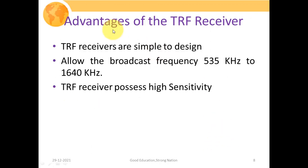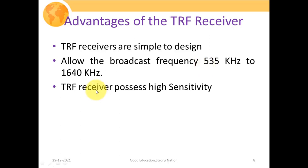TRF receivers are simple to design, as they consist of a very small number of electrical components. They allow the broadcast frequency range of 535 kHz to 1640 kHz, which is the standard AM frequency band given by the FCC. The major advantage of the TRF receiver, apart from its simplicity, is that it possesses high sensitivity — that is, very low strength signals can also be properly received.